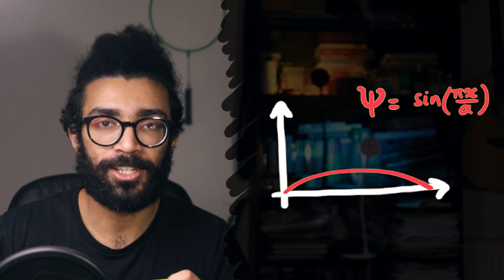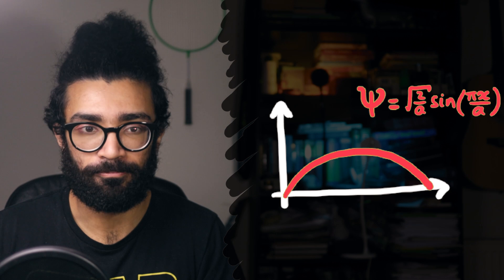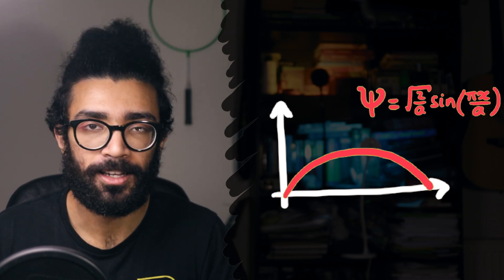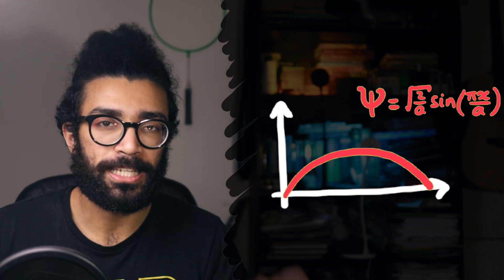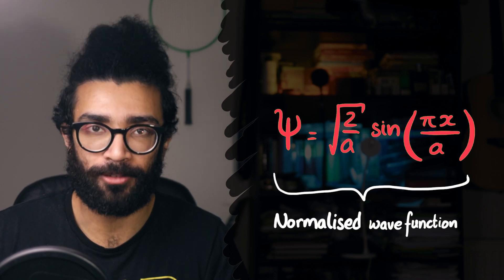And so normalization is this stretching or shrinking process used to make sure that the probability of finding our particle somewhere along our x-axis, in this case, has to be equal to 1. We have to find it somewhere because we know it exists. And what we've got here is known as the normalized wave function. This is the full correct solution. And that's all I've got for you today.